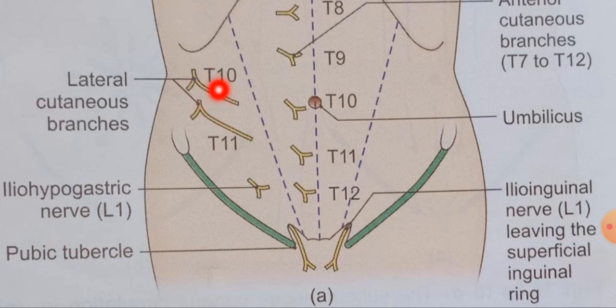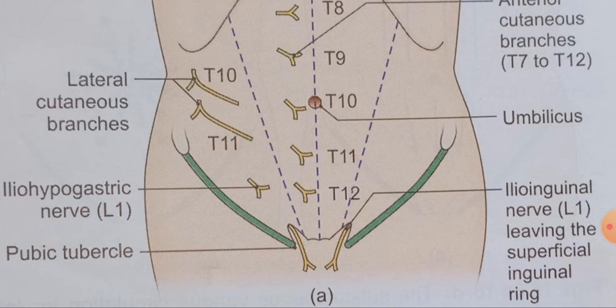Coming to the lateral cutaneous nerves, they are two in number and are derived from the lower two intercostal nerves, that is T10 and T11. Each nerve pierces the external intercostal muscle and divides into a large anterior branch and a small posterior branch. Both emerge between the lower digitations of the external oblique muscle and supply the skin of the side of the abdomen. The larger anterior branch also supplies the external oblique muscle.